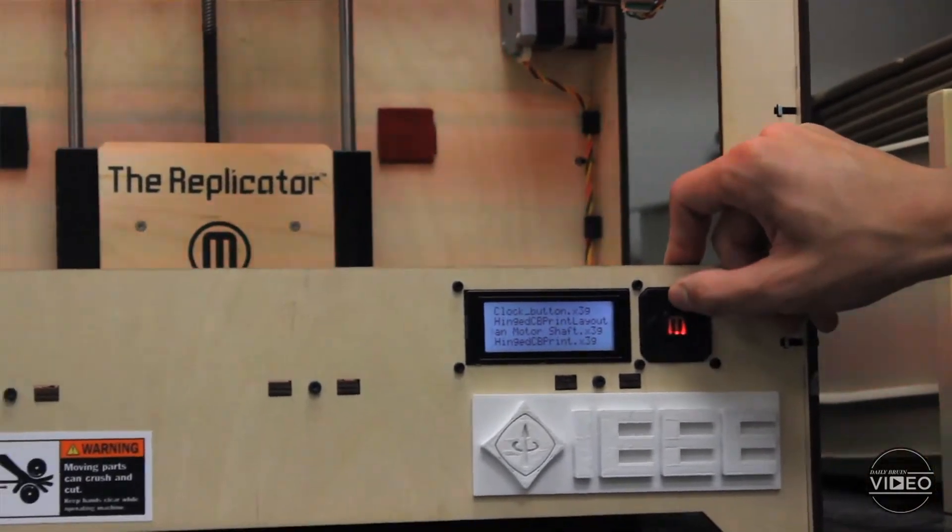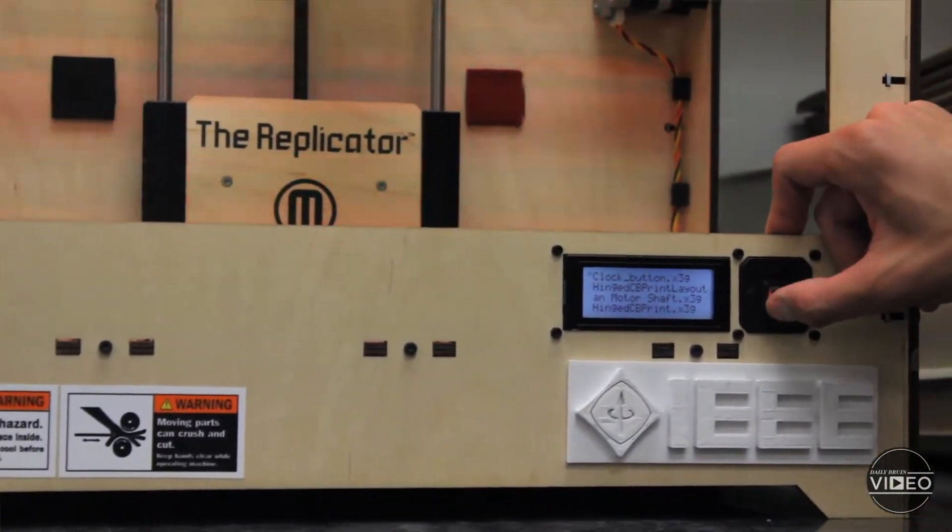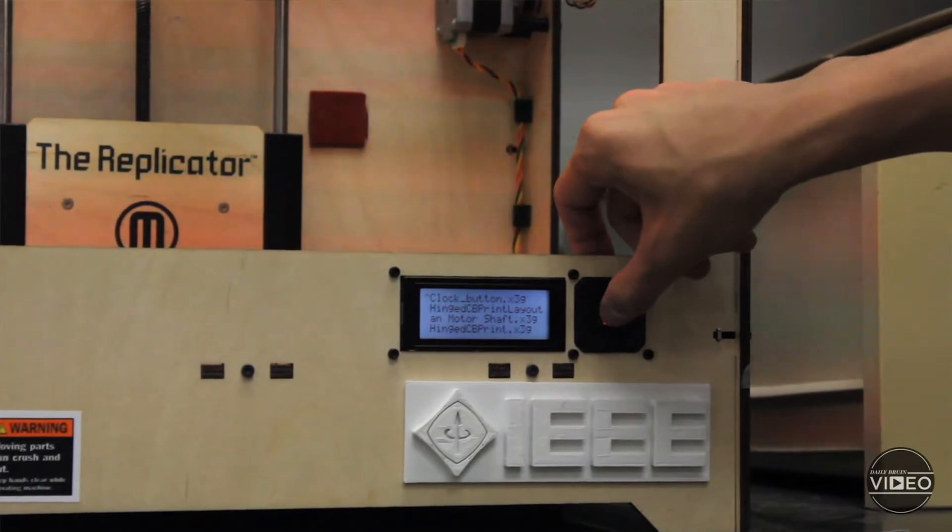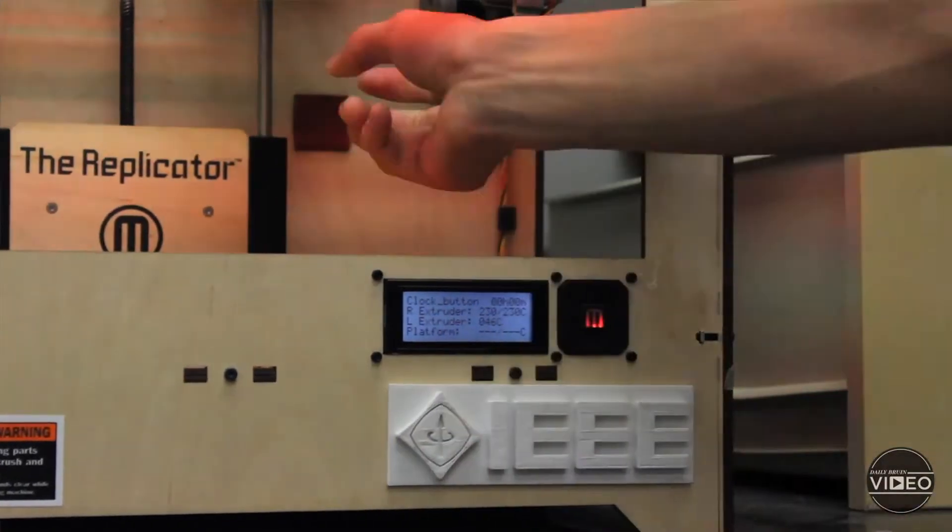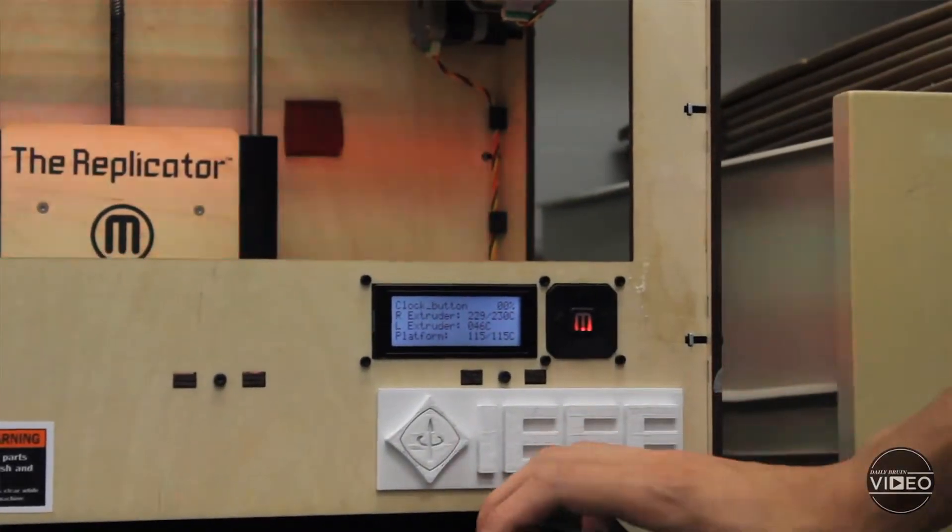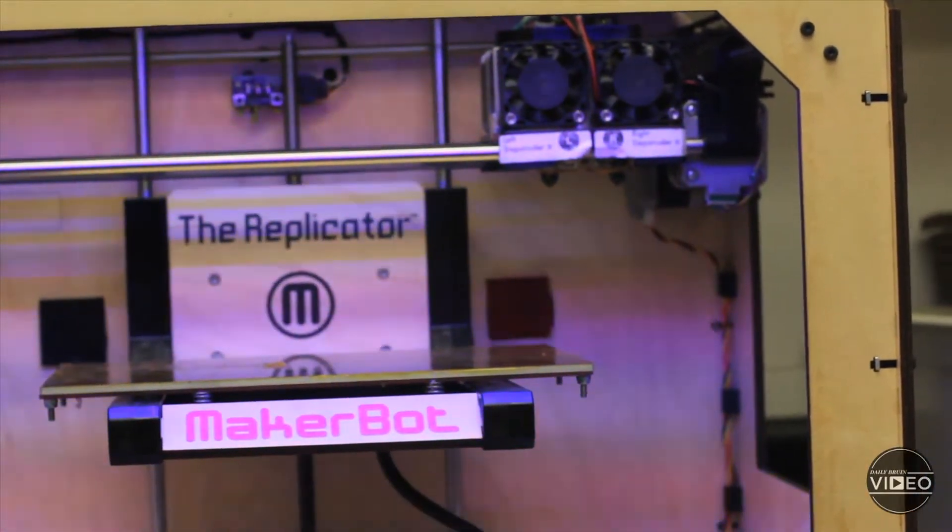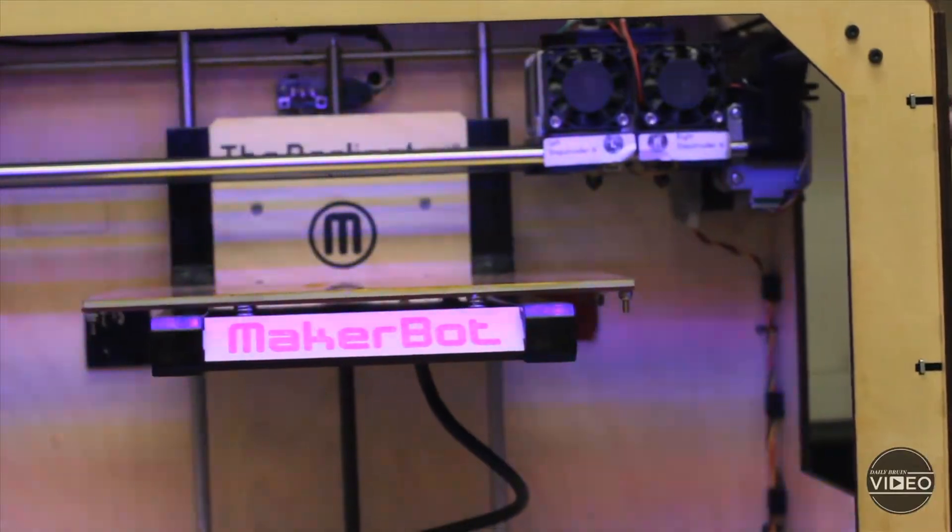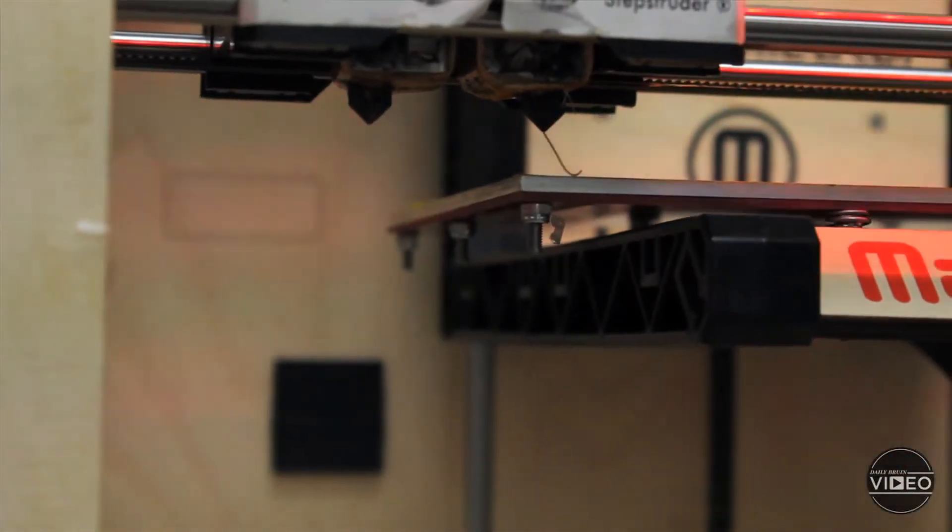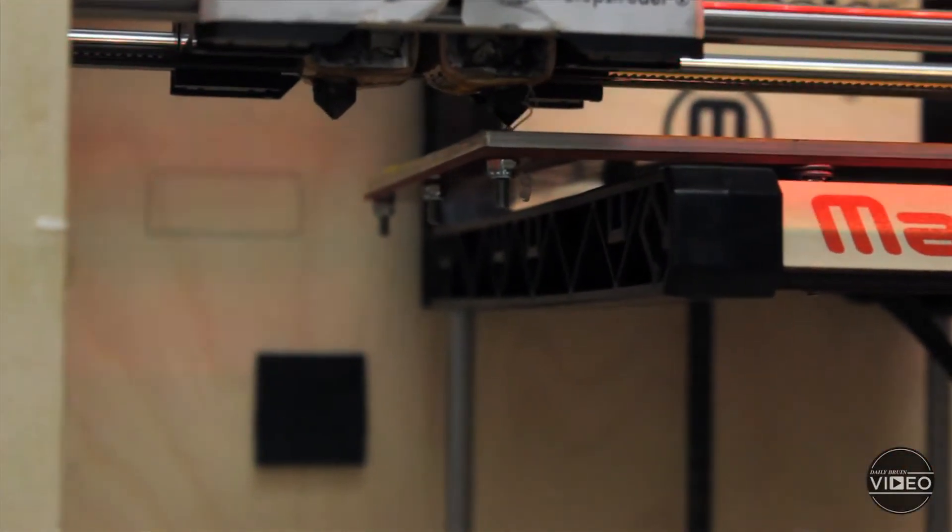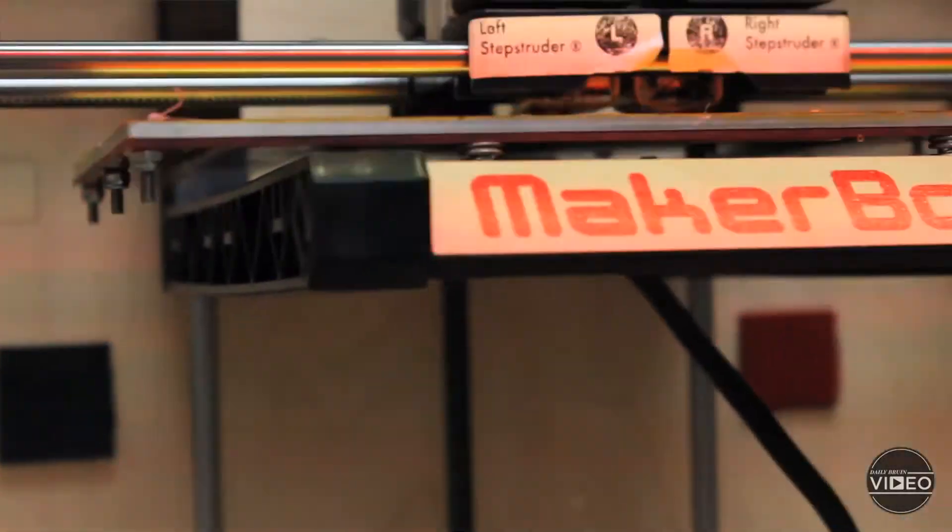Now, if I want to print out Clock Button, all I have to do is hit OK. And you'll notice that the 3D printer reads the file and begins the process of printing. It'll raise the build platform to the correct level of the extruders, and then start one by one layering on the plastic parts that make up this button.